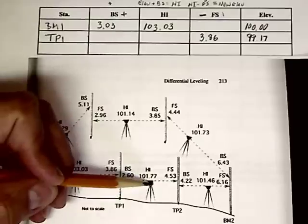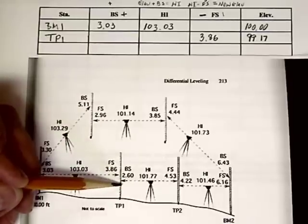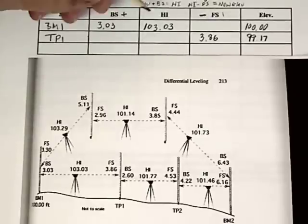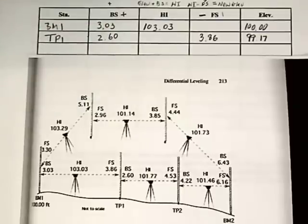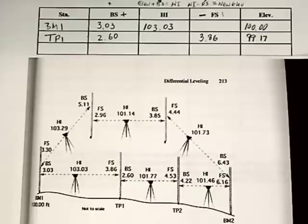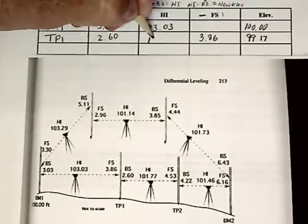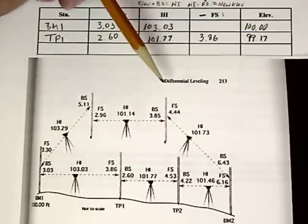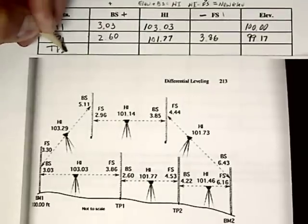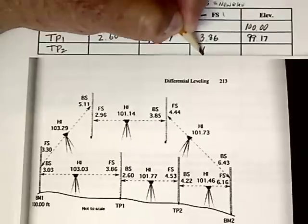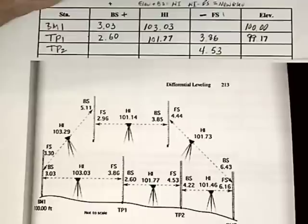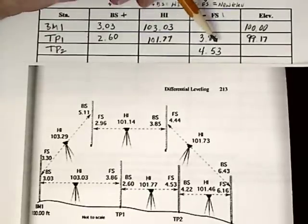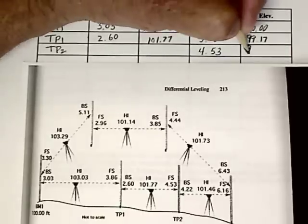We pick up our instrument, move it to a new location, and take a back sight reading on our turning point because now it's a known elevation. The back sight reading is 2.60 feet. Elevation plus back sight equals HI: 99.17 plus 2.60 is 101.77. The new foresight reading is 4.53 on turning point 2. Then HI minus foresight gives our new elevation of 97.24.